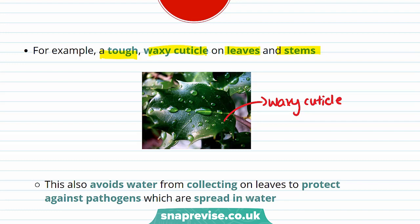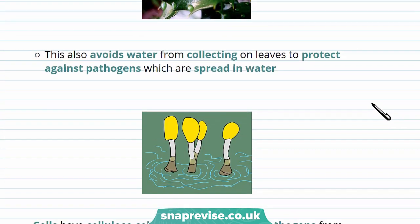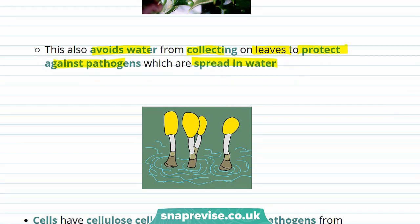Plants can have either a thick or thin waxy cuticle. The waxy cuticle prevents water loss but also avoids water from collecting on leaves, which protects against pathogens spread in water. In particular, it prevents against fungal pathogens.